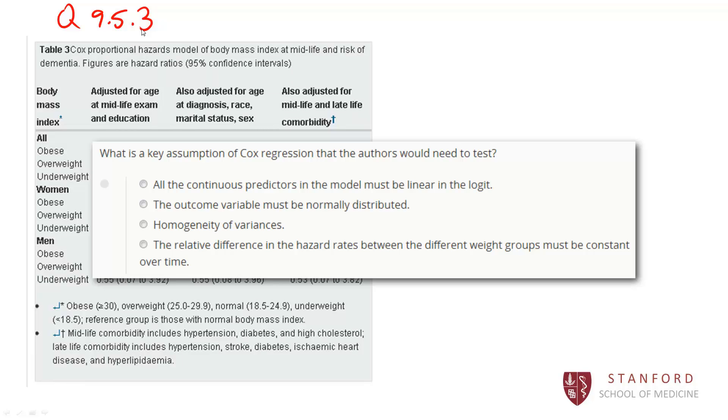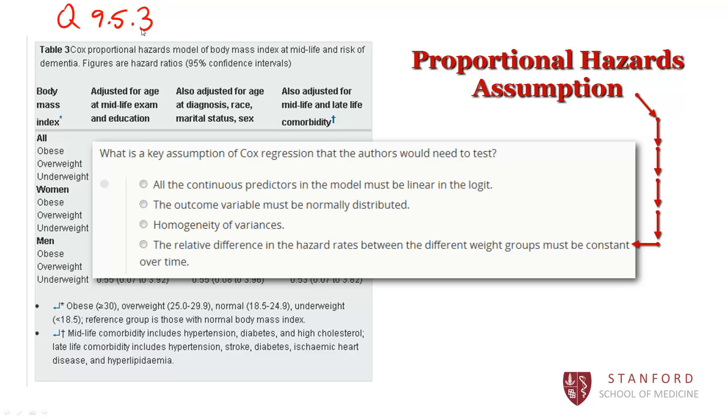One of the key assumptions of the Cox regression model is something called the proportional hazards assumption. And what that says is that the relative difference in the hazard rate between different groups has to be constant over time. We have to have proportional hazards. That hazard ratio which we're seeing here can't change over time because we're representing it here as a single hazard ratio. So the answer D here would be correct. The relative differences in the hazard rates between the different weight groups must be constant over time.